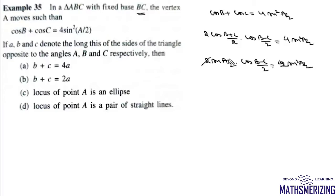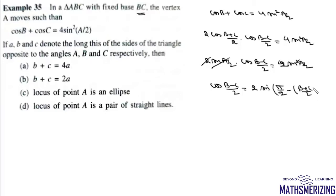We cancel 2 with 2 and then cancel sin(A/2), getting the condition cos((B-C)/2) = 2sin(A/2). We then write A/2 as π/2 - (B+C)/2, and since sin(90° - θ) = cosθ, we get cos((B-C)/2) = 2cos((B+C)/2).